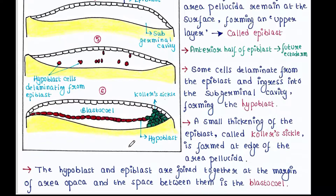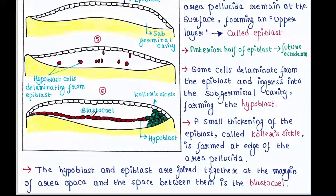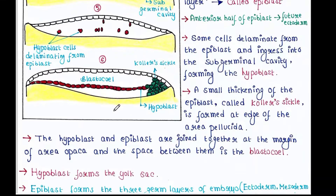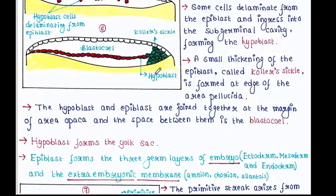A small thickening of the epiblast called Koller's sickle is formed at the edge of the area pellucida. The hypoblast and epiblast are joined together at the margin of the area opaca, and the space between them is called the blastocoel.